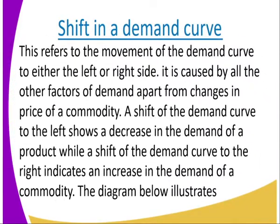Let's go to shift in the demand curve. This refers to the movement of the demand curve to either the left or the right side. It is caused by all the other factors of demand apart from changes in the price of the commodity. A shift of the demand curve to the left shows a decrease in demand of the product. But when it shifts towards the right hand side, it indicates there is an increase in the demand of the commodity.